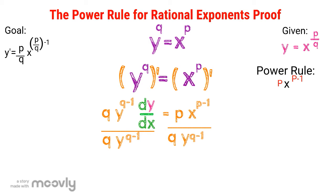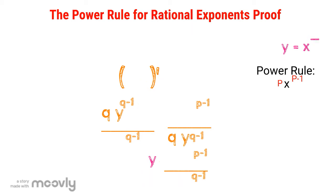Now remember, we have dy dx on the left side because we're taking the derivative of y with respect to x. On the right side, we just use the power rule. That gives us dy dx equals p x to the power of p minus 1 over q y to the power of q minus 1.